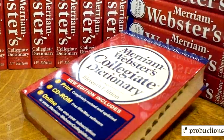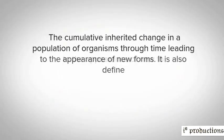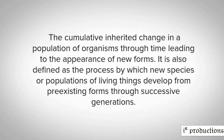According to the Merriam-Webster dictionary, evolution is defined as the cumulative inherited change in a population of organisms through time leading to the appearance of new forms. It is also defined as the process by which new species or populations of living things developed from pre-existing forms through successive generations.